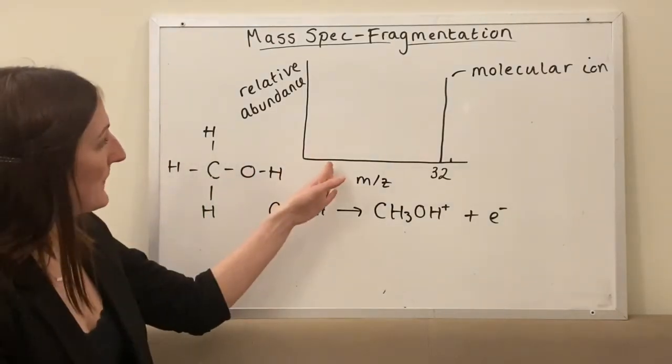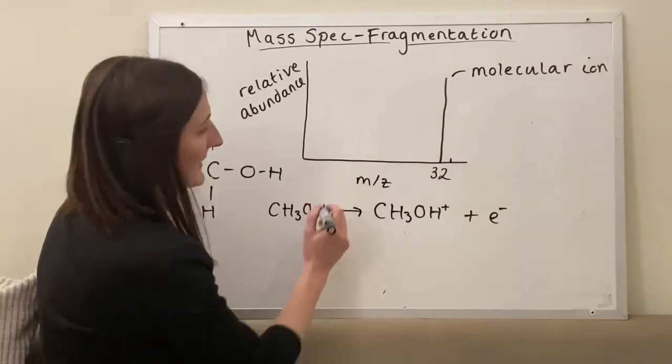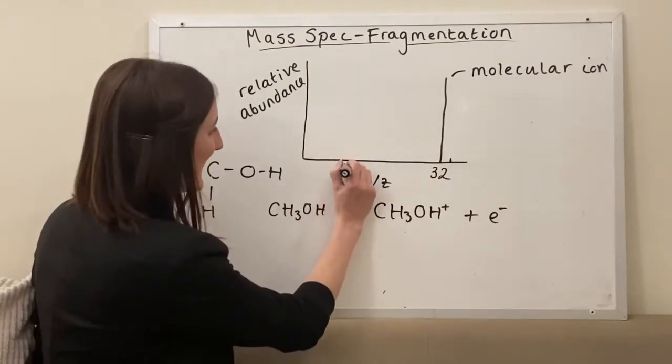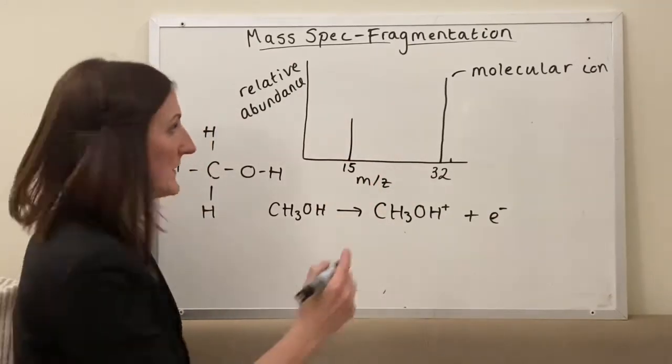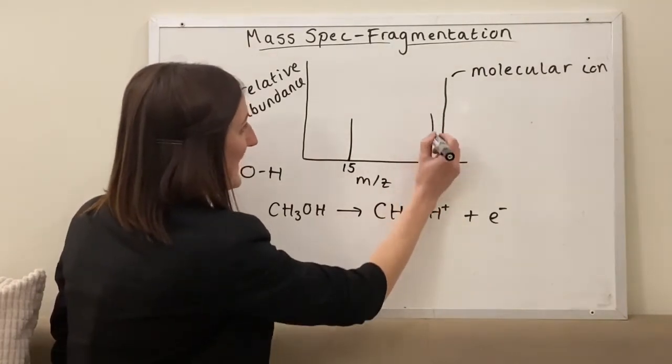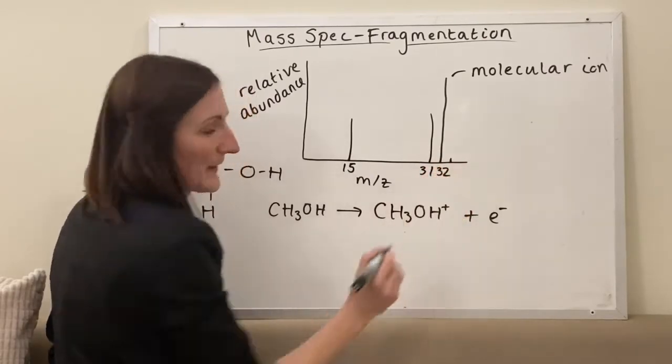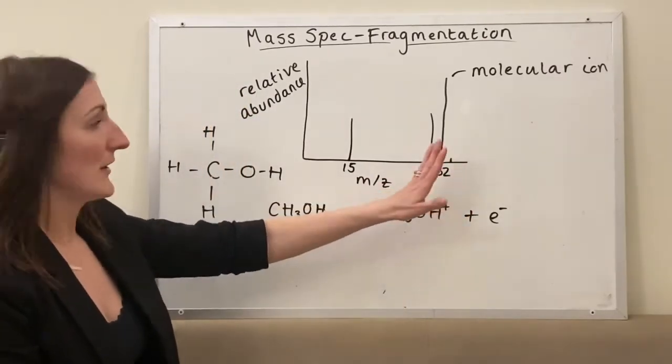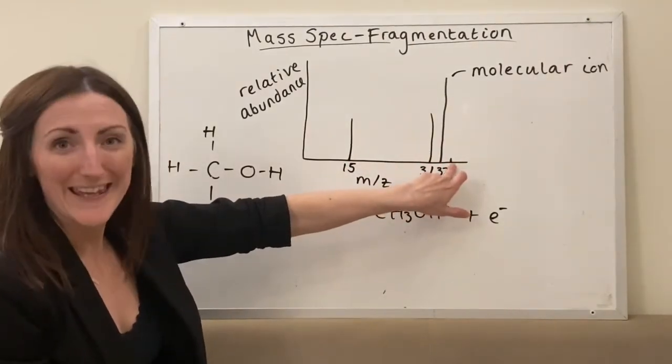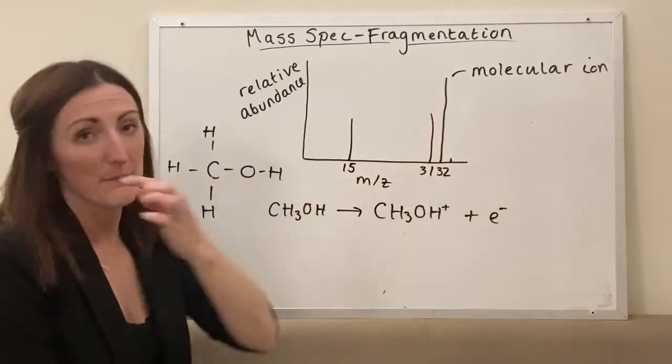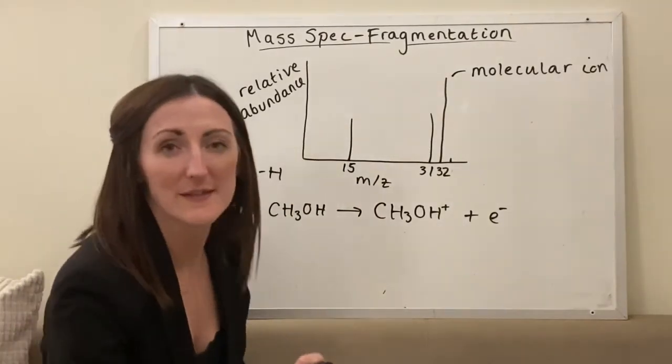So the other main peaks in my methanol actually occur at 15. Again, apologies for the scale, I'm going to put 15 around here. We'd have a peak. And we actually get a peak at 31 as well. So I'll do another little peak there at 31. Just before I carry on then, showing you what's caused these peaks here, I've purposely drawn a little wee peak here, just one unit after my molecular ion, so a 33 in this instance.